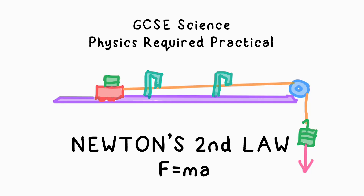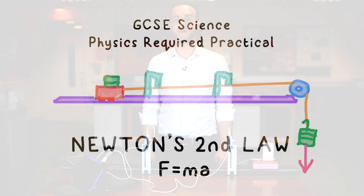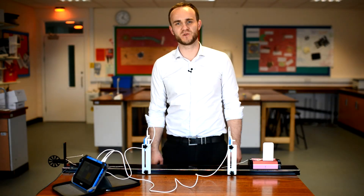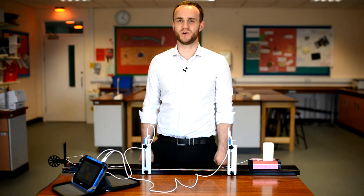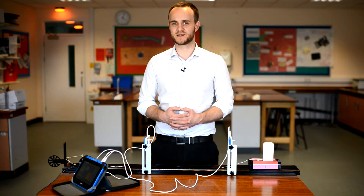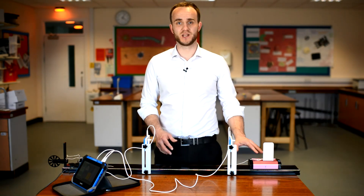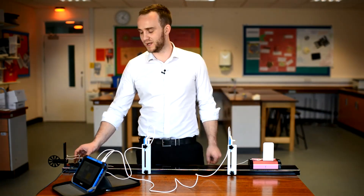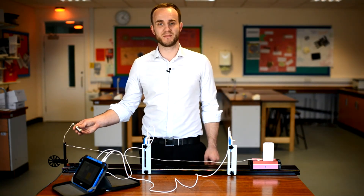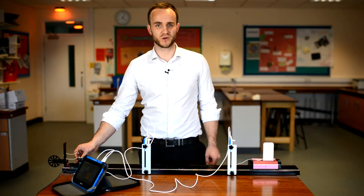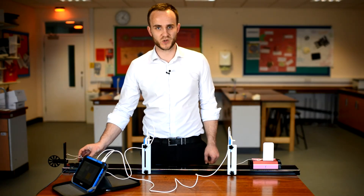I'm going to show you another science GCSE required practical — this time for physics — and we're going to verify Newton's second law, that is F equals MA: force equals mass times acceleration. We're going to be doing that with a track, a trolley, and that trolley is going to be accelerated by some masses hanging over a pulley, connected to the trolley with a piece of string.